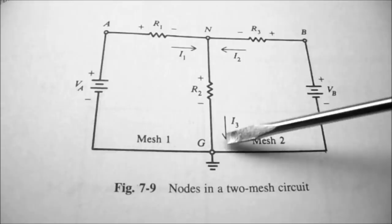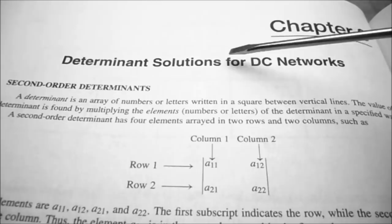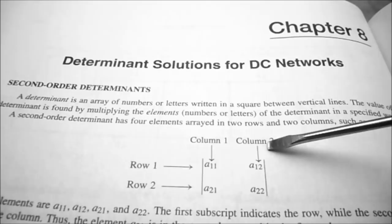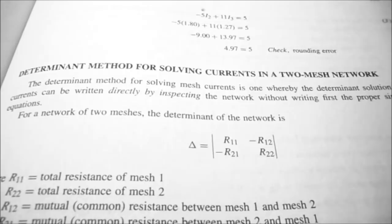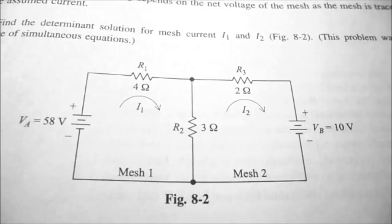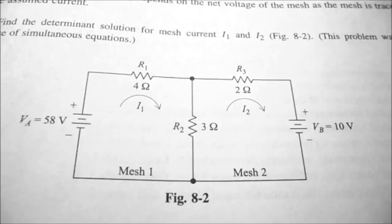Chapter eight covers determinant solutions for DC networks and shows you how to solve for second-order determinants, which is similar to the two mesh currents we need to solve today. There's a section on the determinant method for solving currents in a two-mesh network, and figure 8.2 is an example. I'm going to show you how to set up the equations so you can just type them into your calculator.